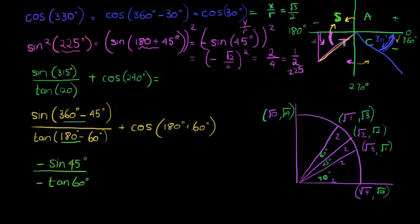And this one plus cos of 180 plus. 180 plus is third quadrant. Tan is positive in the third quadrant. Meaning cos is going to be negative. So when we multiply this positive with a negative, it becomes negative cos of 60 degrees.